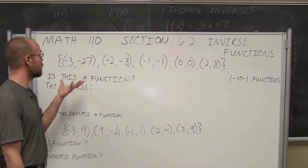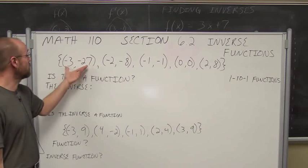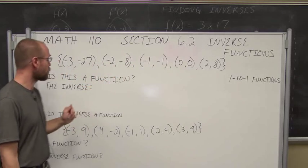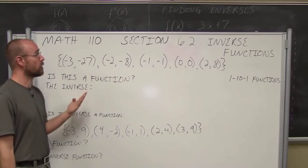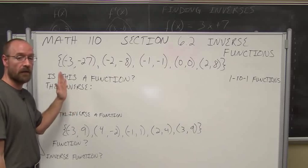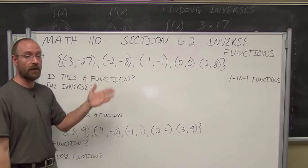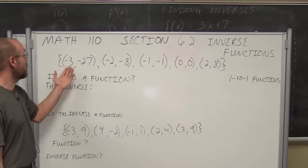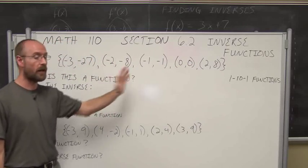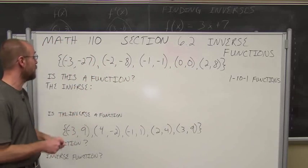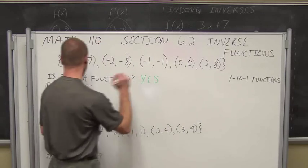The first thing we're going to do is look at some relations. For these points here, we want to ask: is this a function? In order to be a function, it would have to pass the vertical line test, which means the x values do not repeat. I have negative 3, negative 2, negative 1, 0, and 2 — these are unique x values, none of them repeat. So yes, it is a function.